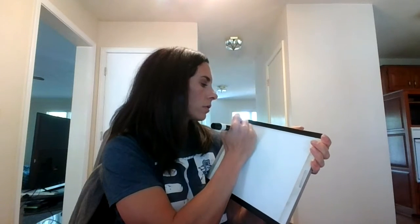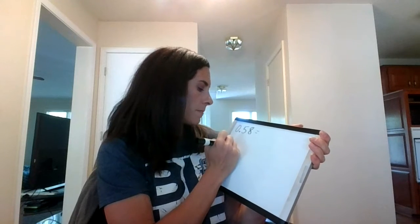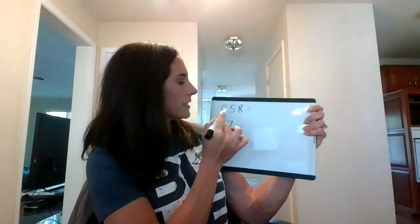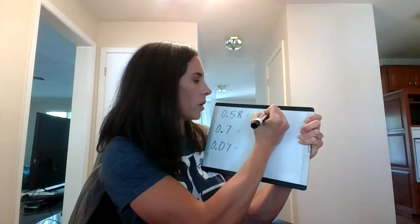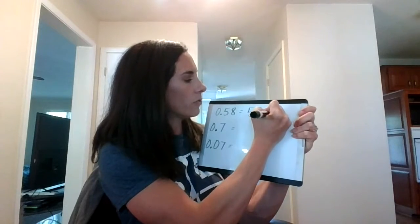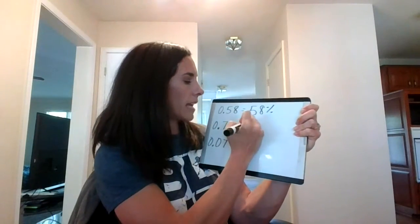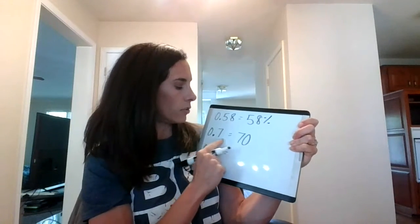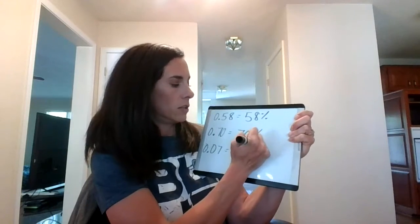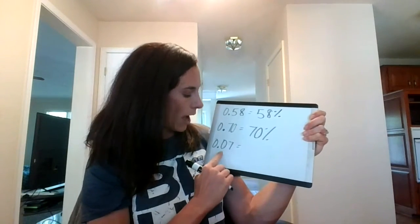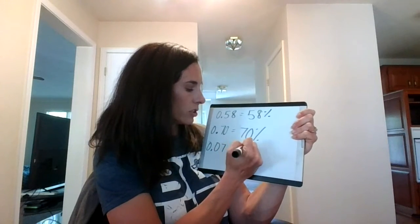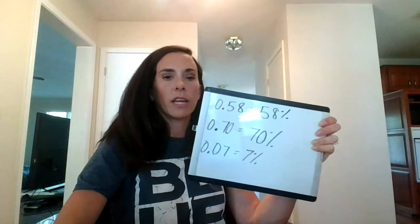On the next slide, we're changing decimals to percents. Our tenths becomes our tens, our hundredths becomes our ones. So 0.58 is 58%. Here I only have tenths — technically there's a zero in the hundredths, and 7 tenths is also 70 hundredths, so it's 70%. Here, we don't have anything in our tenths, but we have a 7 in our hundredths, so it's just 7%.